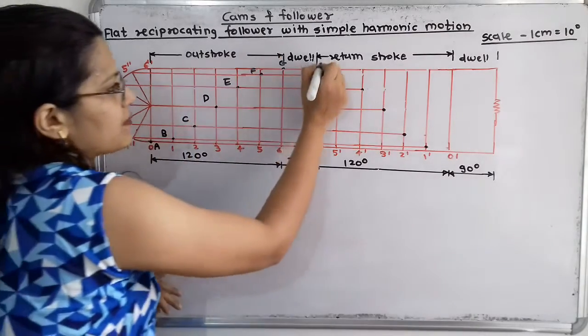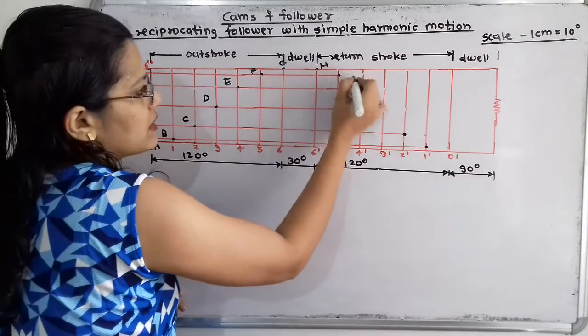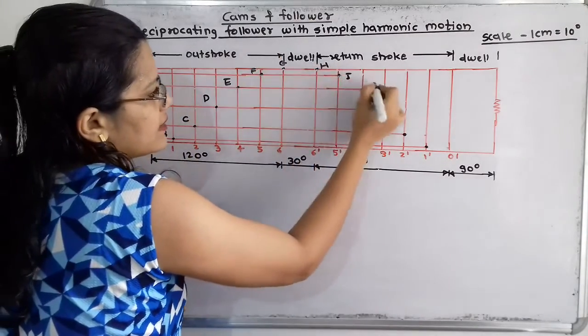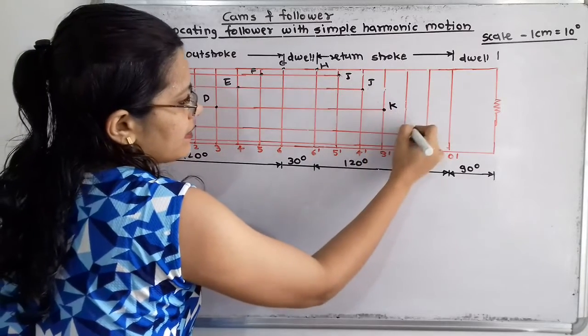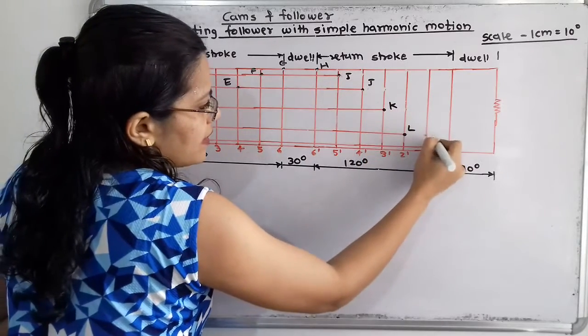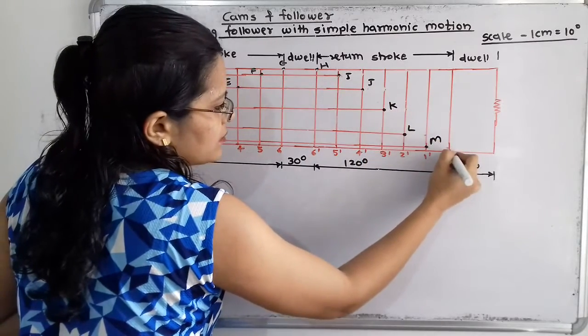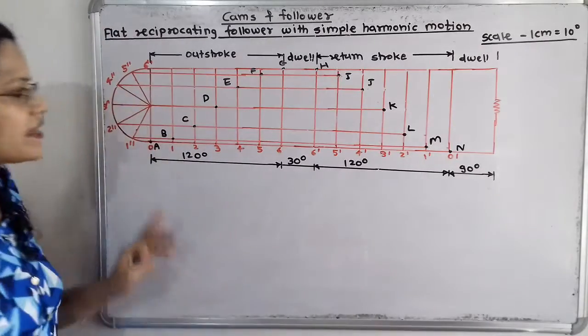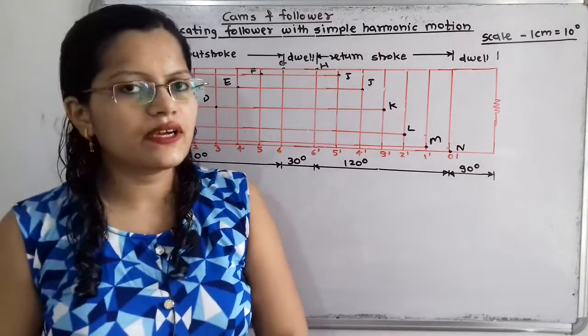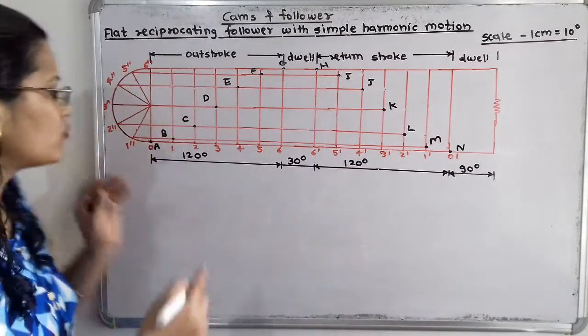Then the next points will be H, I, J, K, L, M, and the last point N. So these are all the points selected.